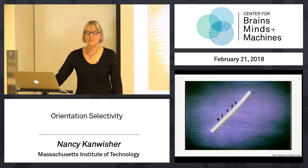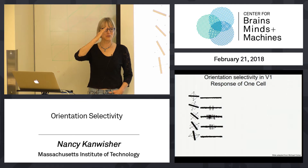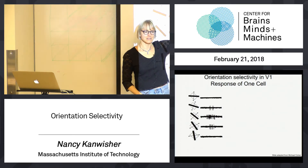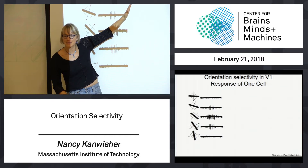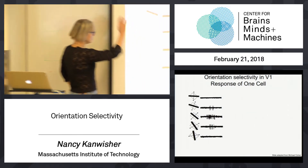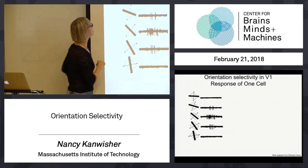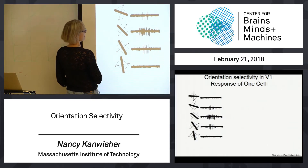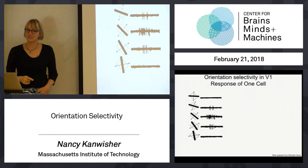The upshot is that what you find in primary visual cortex is that neurons have a property called orientation selectivity — each neuron likes bars of a certain orientation. That neuron we just saw liked a particular orientation. Later in that movie they present bars of a different orientation, and it doesn't like those. 'Doesn't like' means it doesn't fire as much.